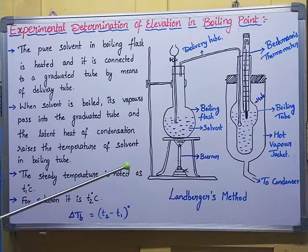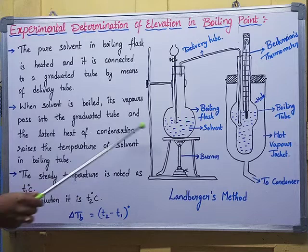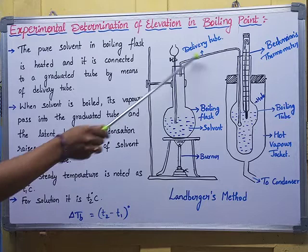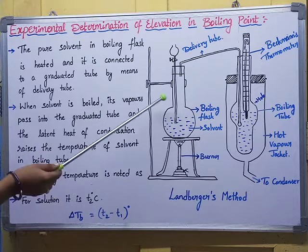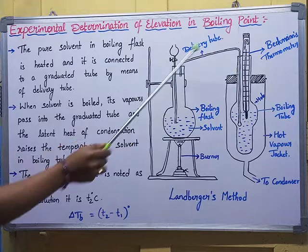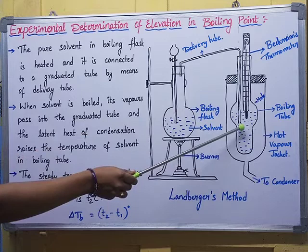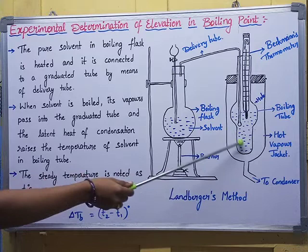You can clearly observe there is a boiling flask, which is heated from below by using a burner. Along with this you can observe a delivery tube. This boiling flask consists of pure solvent, so whenever we are heating the pure solvent we get some vapors. Those vapors will be passed from this container to another through the delivery tube. There is a second tube called boiling tube 2, otherwise also called a graduated tube, which also consists of solvent in the beginning.